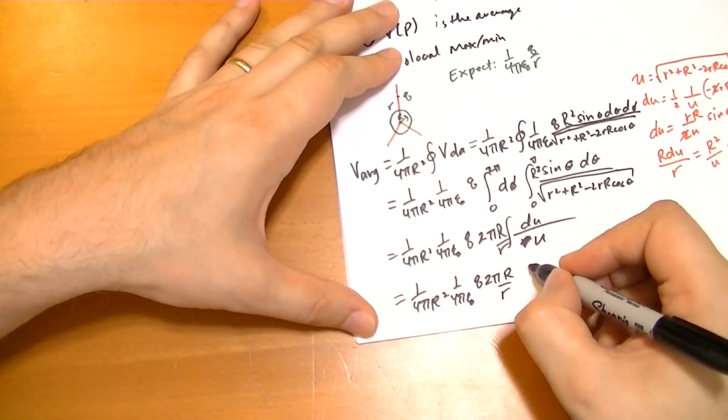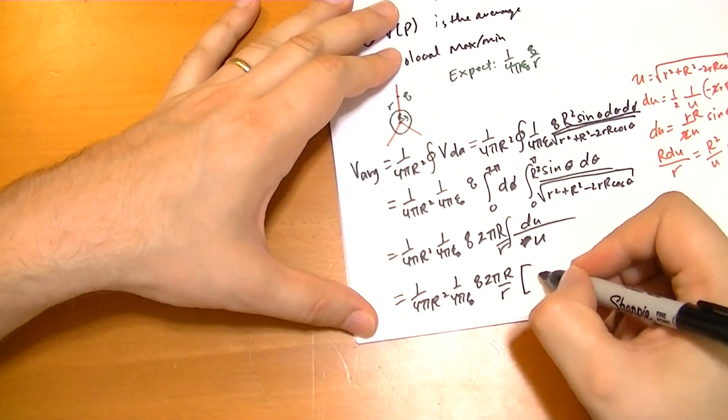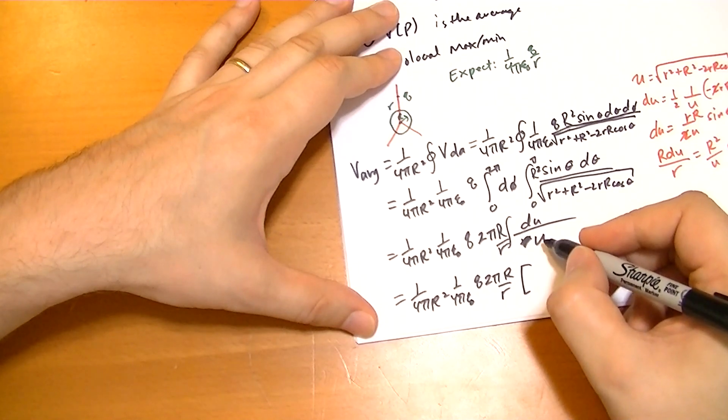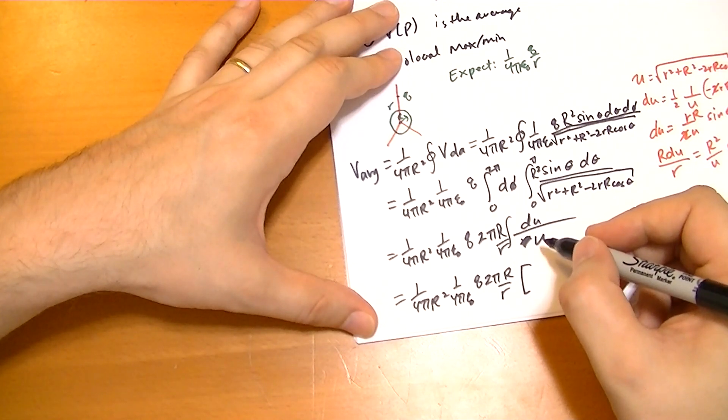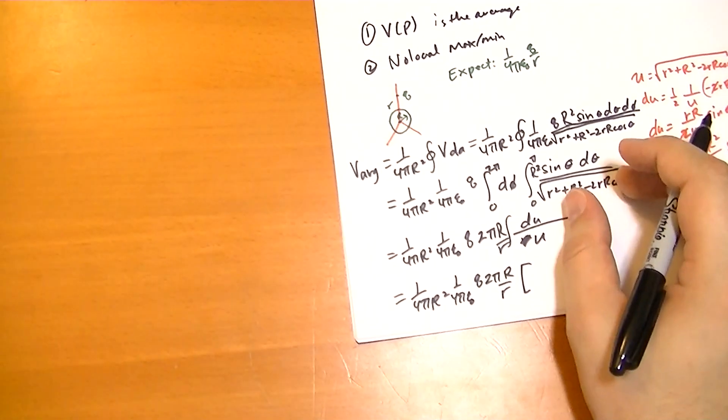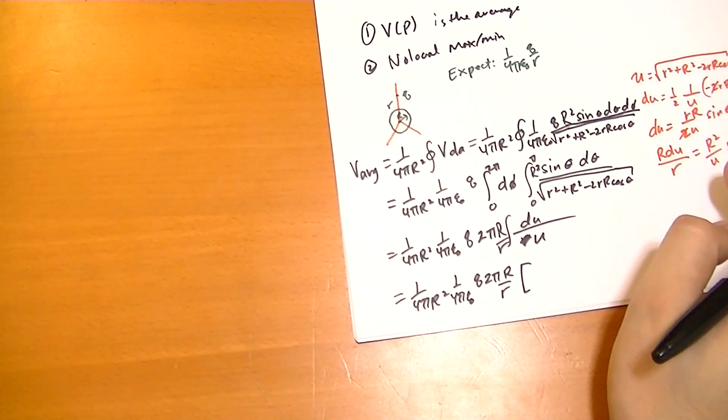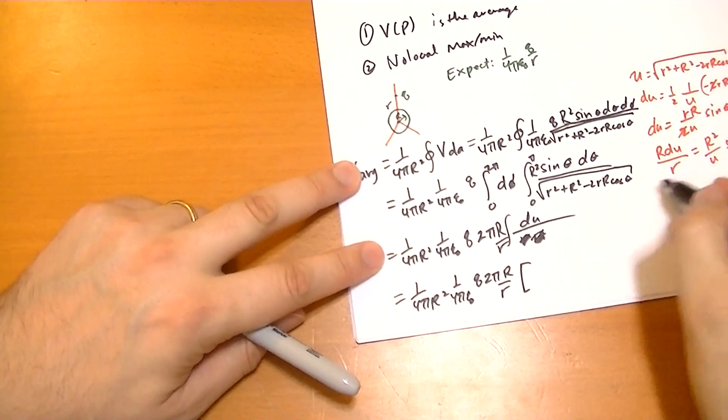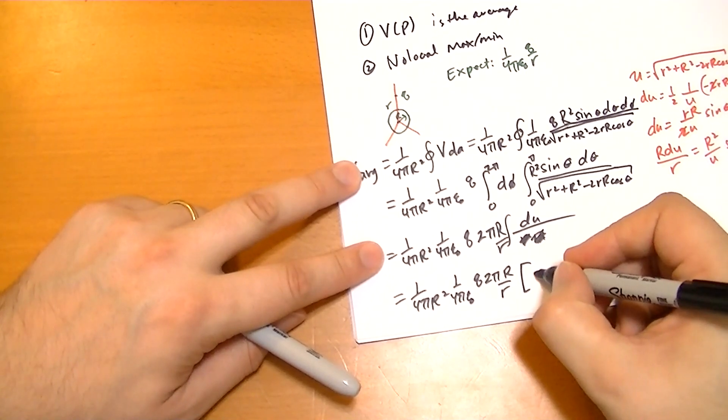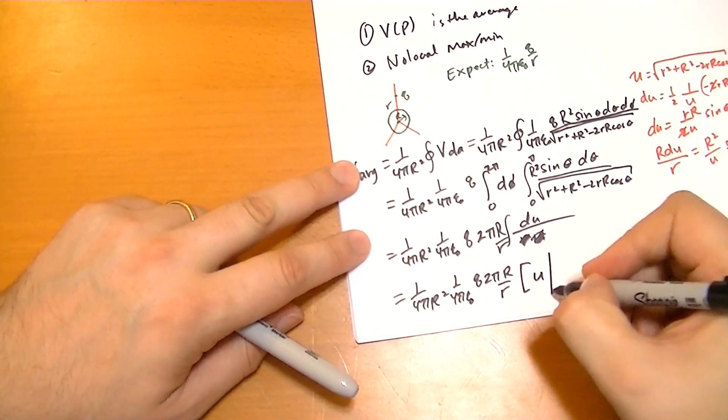And the integral there is just, let's see. It's just du. So it becomes u, evaluated.